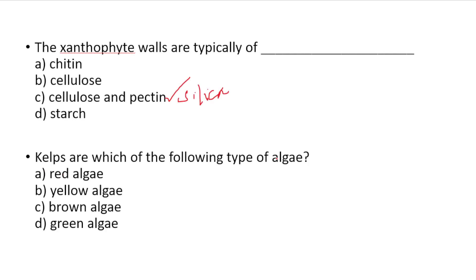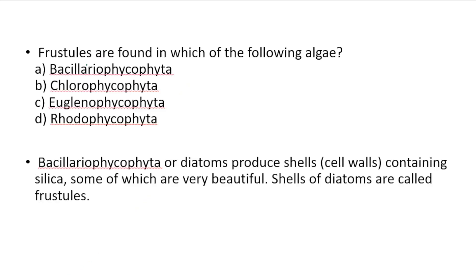Kelps are which of the following type of algae? Options: Red algae, Yellow algae, Brown algae, Green algae. Answer: Kelps are brown algae.